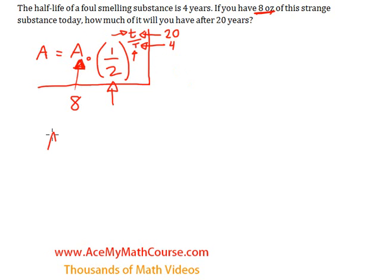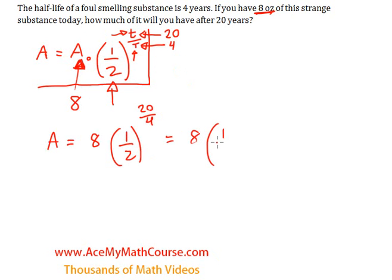We have all the elements, so we get 8 times half to the power of 20 over 4. And 20 divided by 4 is 5.